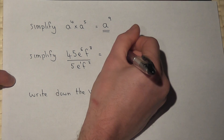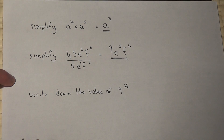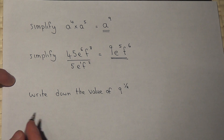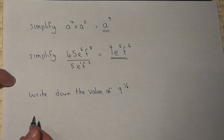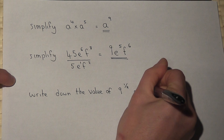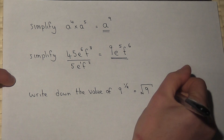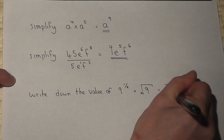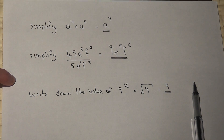So the answer becomes 9e to the power of 5, f to the power of 6. The final question requires you to know what a power of one half means — it just means square root. So 9 to the power of one half is the square root of 9, which equals 3.